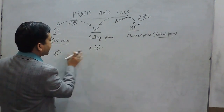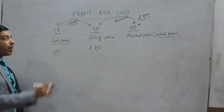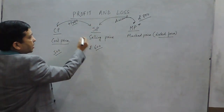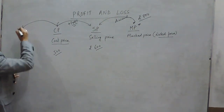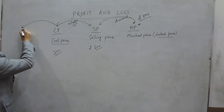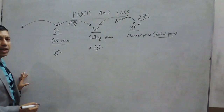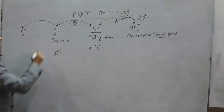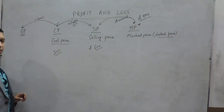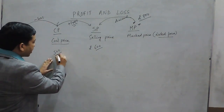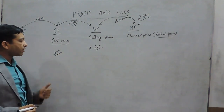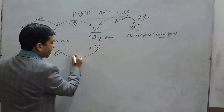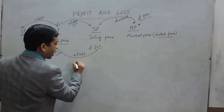Coming to cost price and selling price only: when you sell the article above the price at which you purchased it, that is known as profit. Suppose one purchases an article for Rs.500 and sells it for Rs.600, so there is a profit of Rs.100.